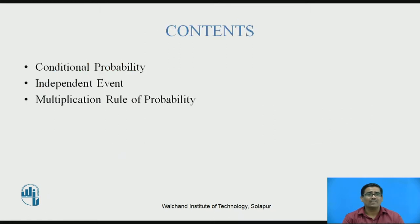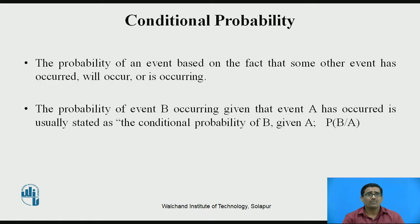The contents of this session are: conditional probability, independent events, and multiplication rule of probability. Before going to conditional probability, we recall that probability means P = N/S, where N means number of events and S means number of sample space.